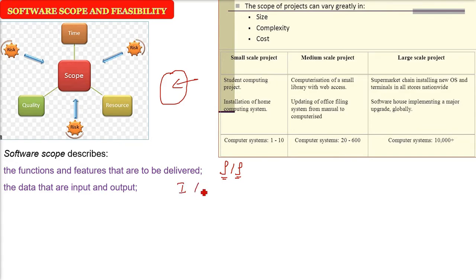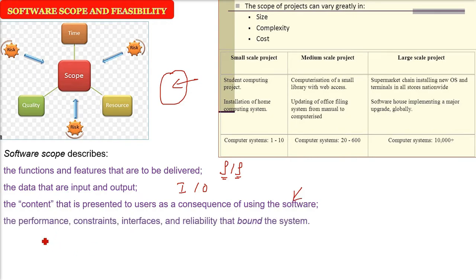The data that will be the input and what data will be the output, and also the content that is presented to users as a result of using the software. Then comes the performance, the constraints, interface, and reliability.